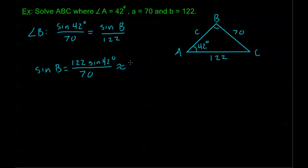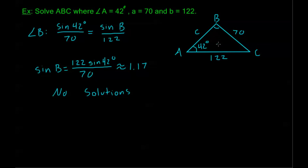Plugging into the calculator gives approximately 1.17. But the range of the sine function is −1 to 1, so sine B = 1.17 is impossible. This triangle has no solutions. There is no triangle with angle A = 42°, side A = 70, and side B = 122. This is the ambiguous case where we have no solutions.